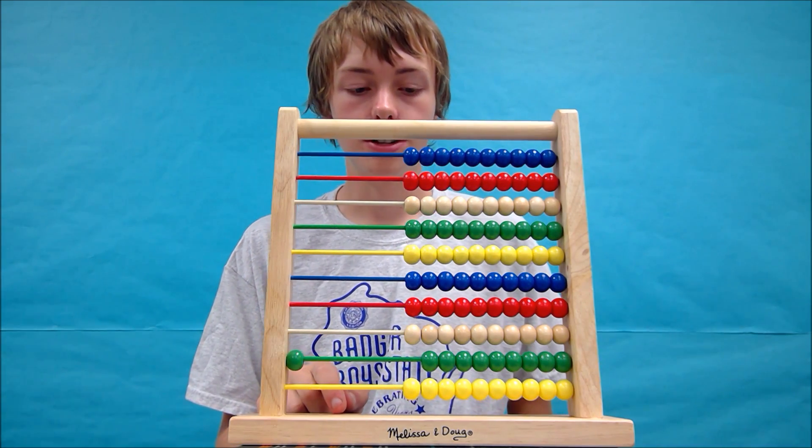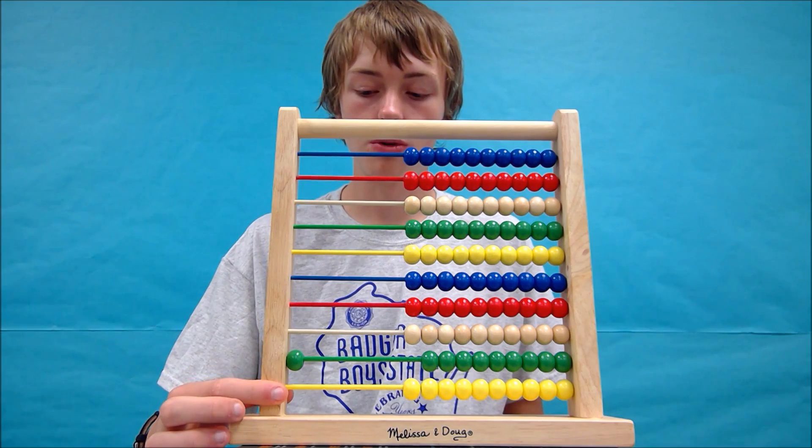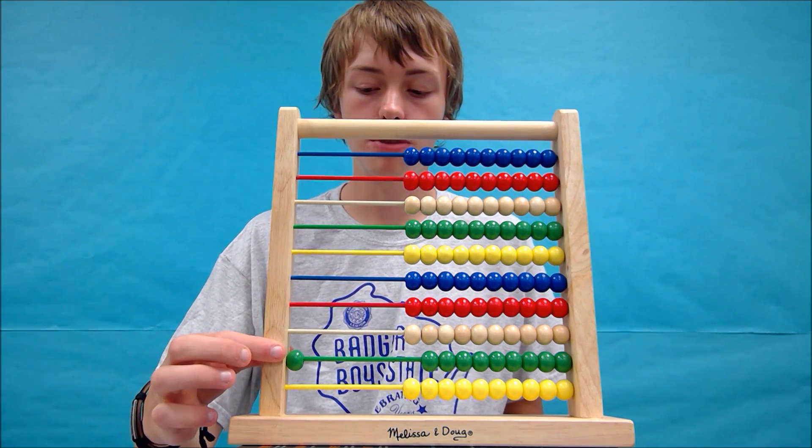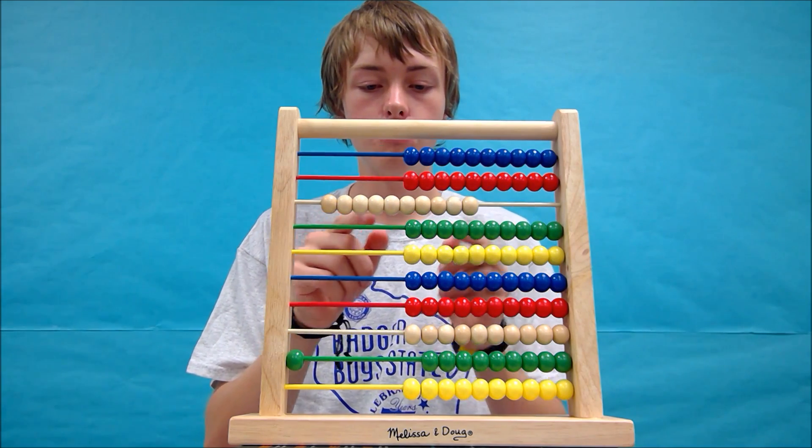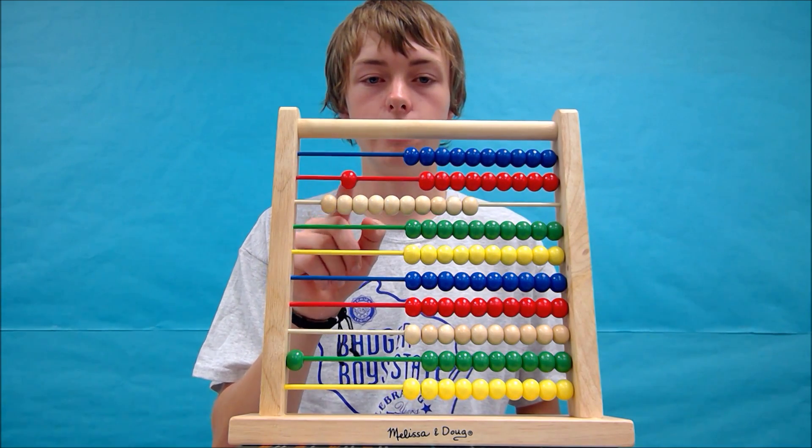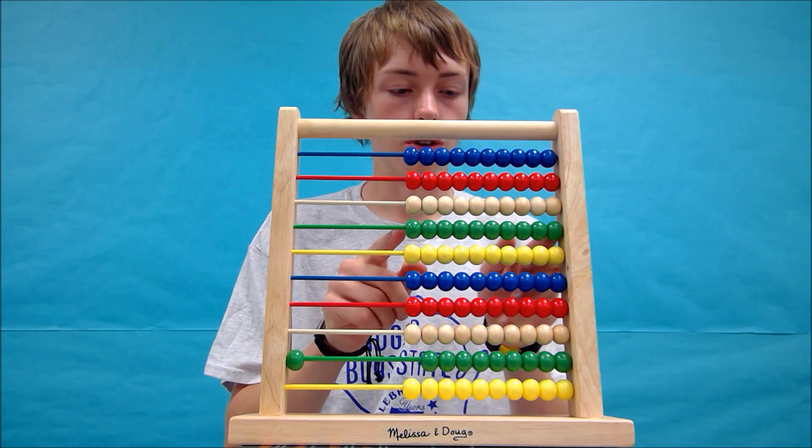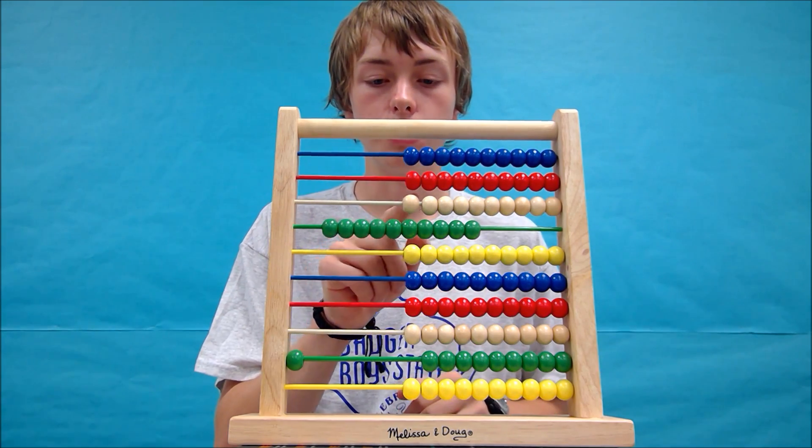And in any situation, 10 beads from the row below equals 1 bead of the row above. So even up here, 10 tan beads equals 1 red bead, or 10 green beads equals 1 tan bead.